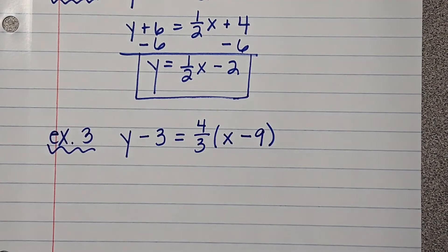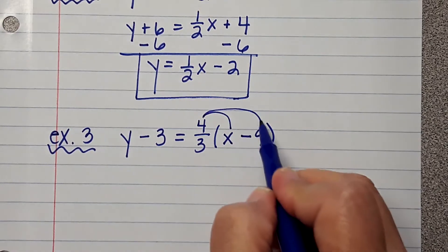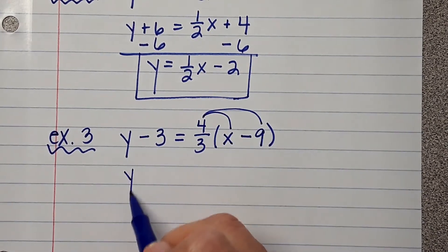We're going to distribute the 4 thirds. So, when I'm asking you to write it in slope intercept form, bless you, you need to distribute. Okay. So, the Y minus 3 stays the same for right now.